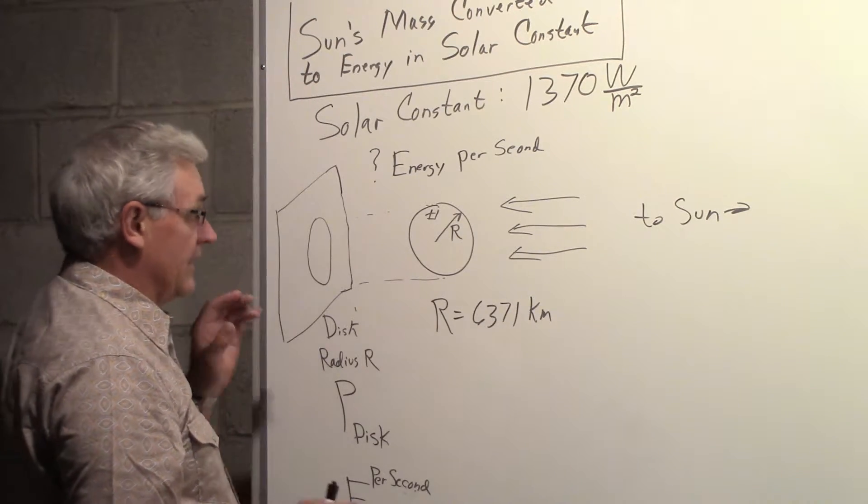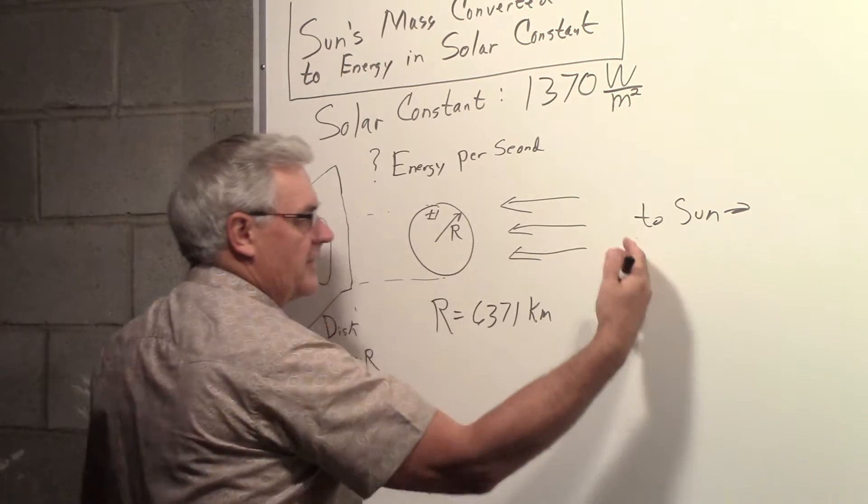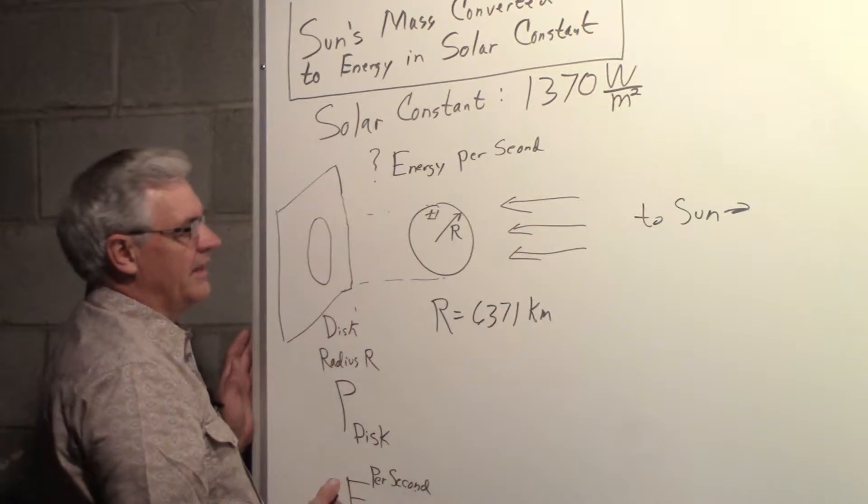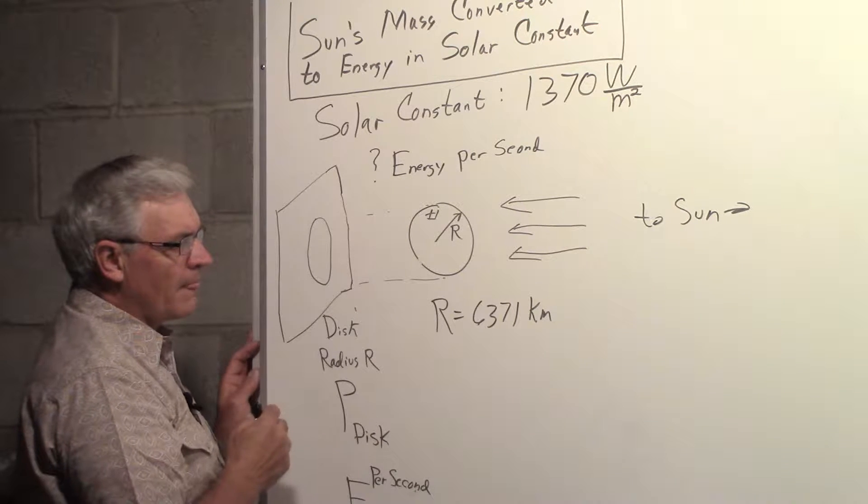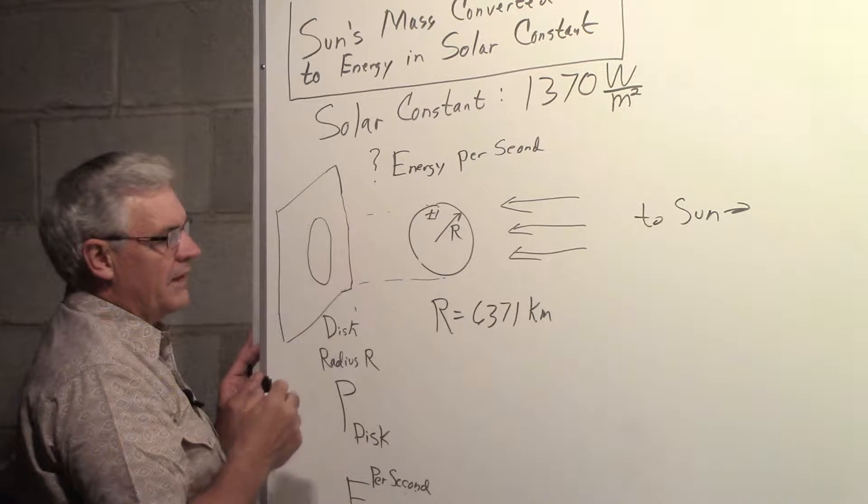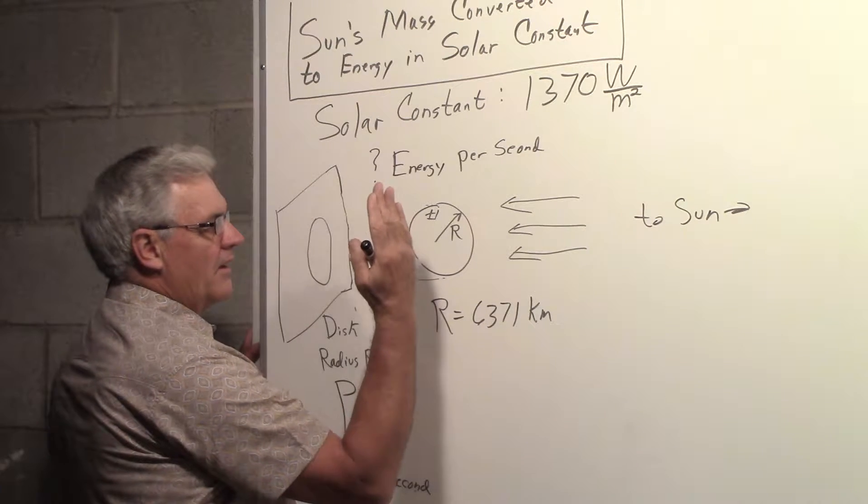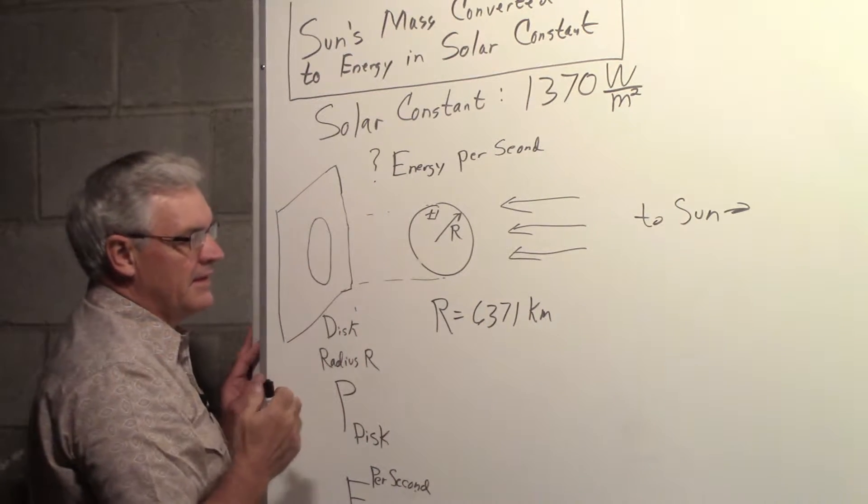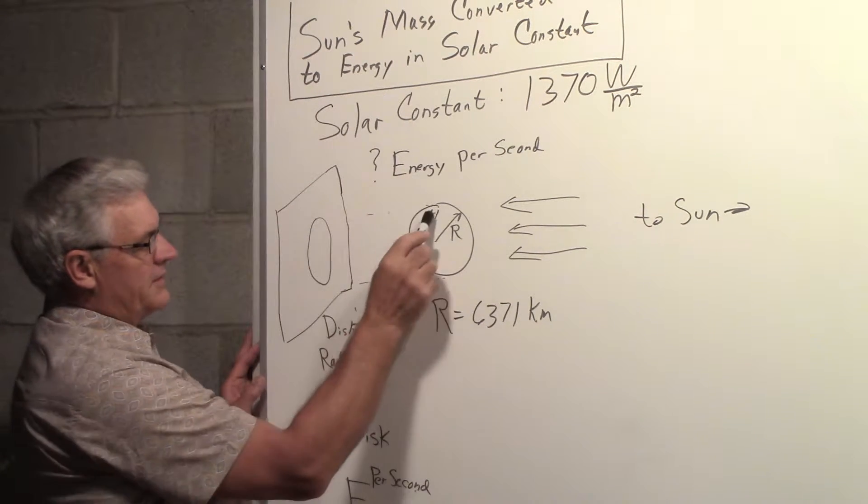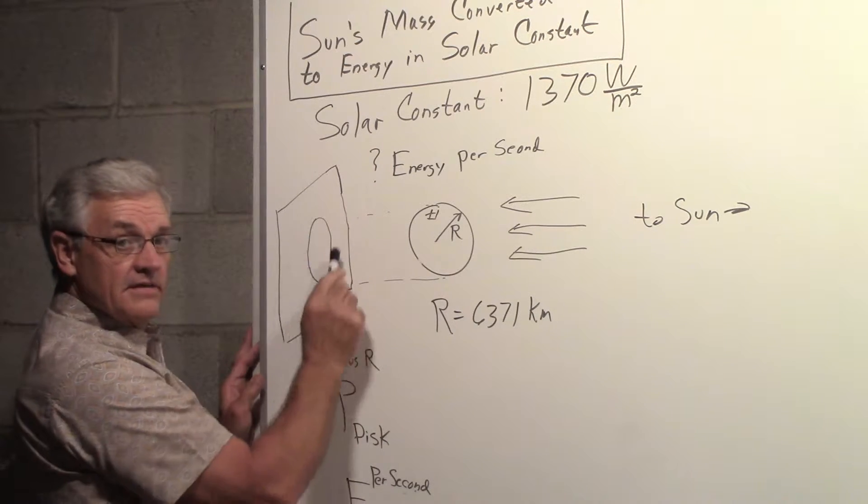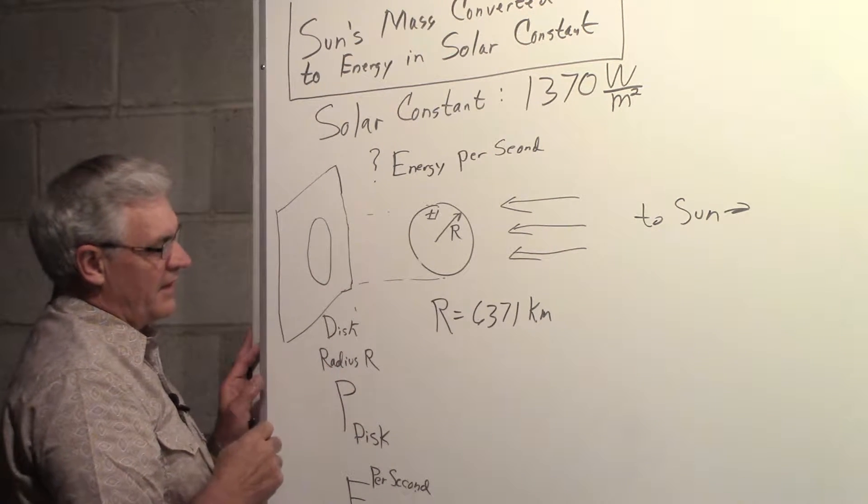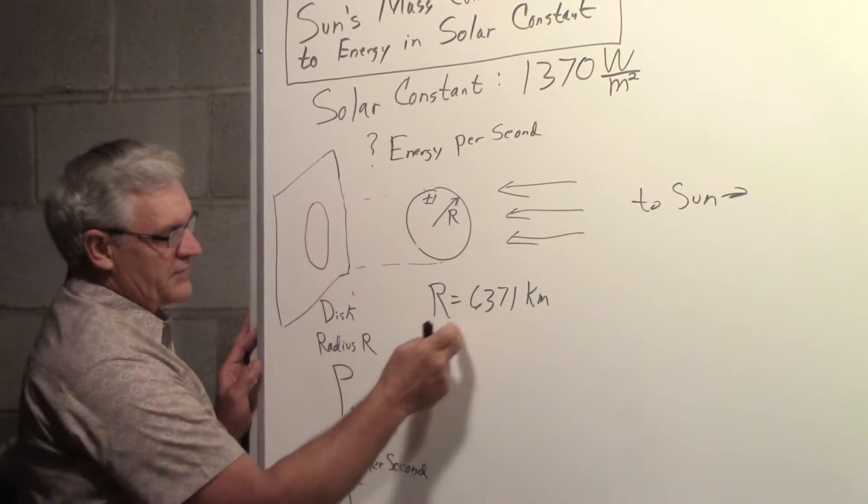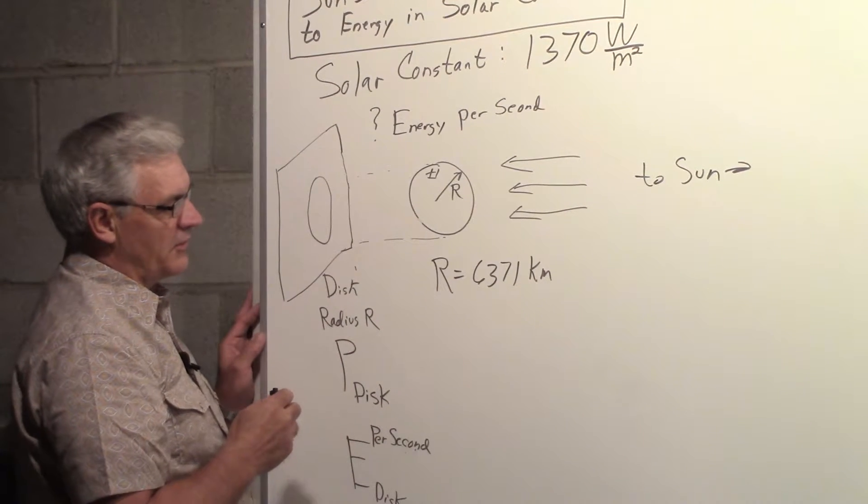So let's say the Sun is out there, here's the energy in the form of light coming to the Earth, Earth's radius R, and we can figure out what the total amount of power is that's being intercepted by the Earth. If we think of a disk having the same radius of the Earth, and the radius of the Earth is 6,371 kilometers.